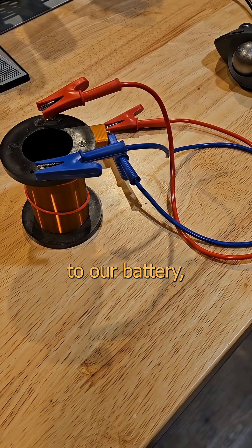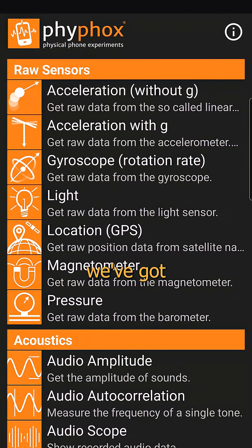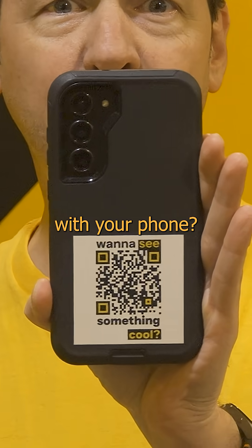I've got coil A connected to our battery, and we can use PhyPhox to see that we've got a magnetic field happening. Did you know you can do this with your phone?